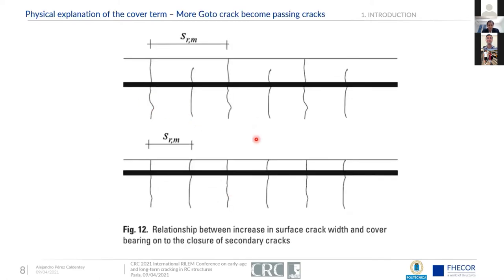The physical reason is that with a larger cover, you don't only have cracks visible at the surface — you also have many internal cracks. With a large cover, fewer internal cracks propagate to the surface than with a smaller cover. This results in larger crack spacing at the surface, and consequently larger crack widths at the surface.